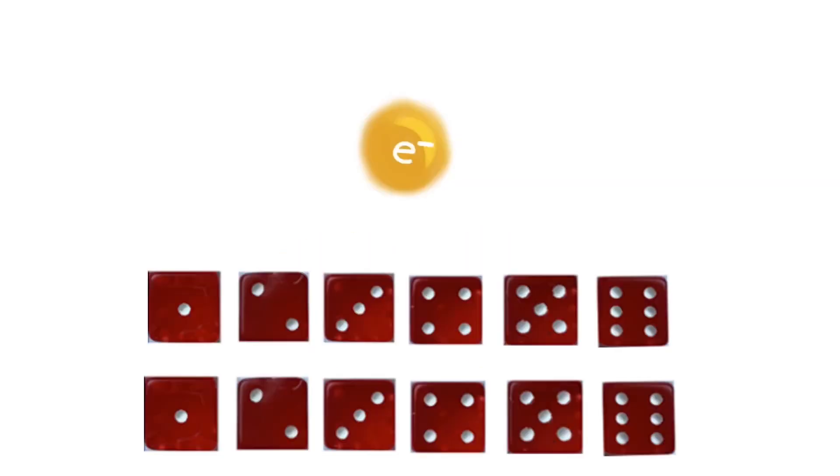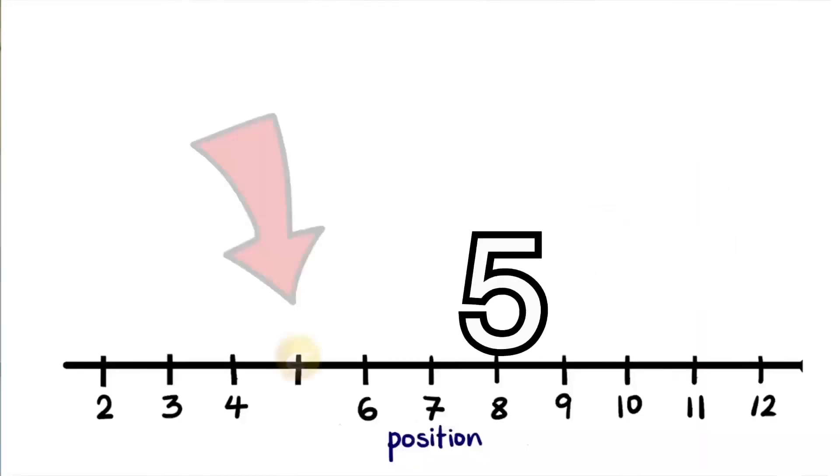Imagine an electron has two dice, six sides each. What the electron rolls is where it will sit along the line. Our electron can't commit to a position until the dice are rolled, remember? Serious commitment issues.